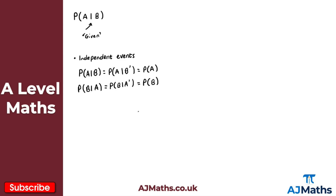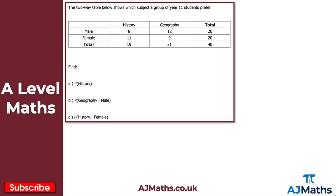Hopefully that seems intuitive: the probability of A given that B has occurred equals the probability of A given B complement — whether or not B occurred doesn't affect A, and vice versa. That covers the introduction to conditional probability. Now let's take a look at a practice question involving a two-way table showing which subject a group of Year 11 students prefer: history or geography, split by male and female.